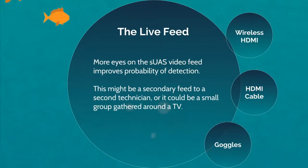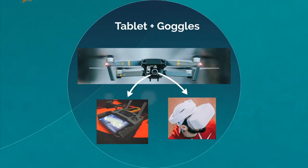Your probability of detection goes up significantly each time you increase the number of eyes watching your live feed. Secondary technicians or onlookers at your field base are good targets to enlist. There are three good ways to do this: goggles, HDMI cable, and HDMI wireless. The goggles will only work with some SUAS to produce a second feed — a Mavic Pro, for example, is capable of producing two signal feeds, one to the controller and one to the goggles. Other SUAS may only output a single signal, meaning you'll have to choose between a phone, tablet, or goggles.